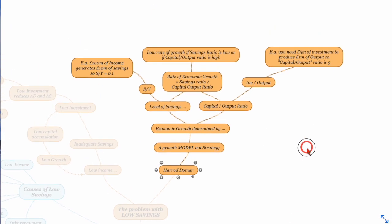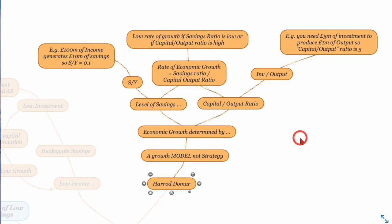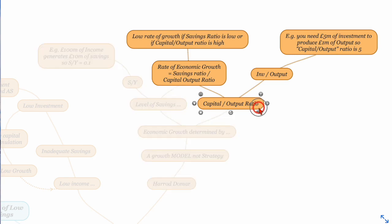So what does Harrod-Domar say about it? Well two economists who came up with this idea that economic growth is determined by two things. As they said it's the level of savings which we just talked about and the capital to output ratio as well.